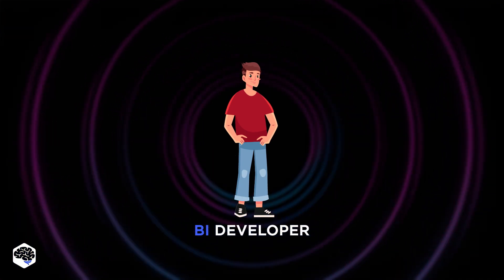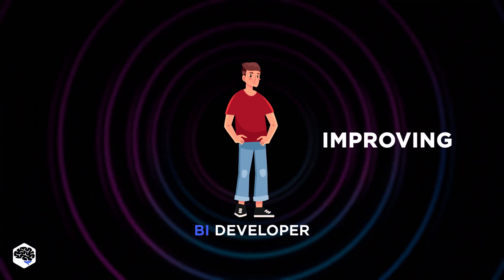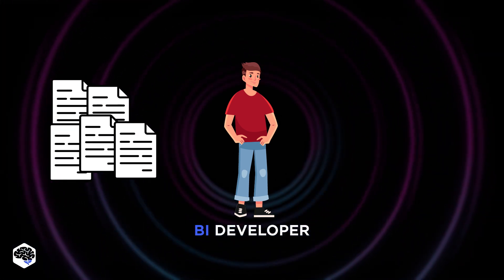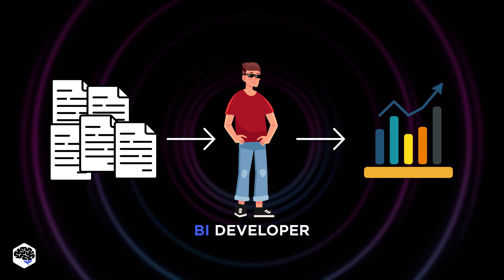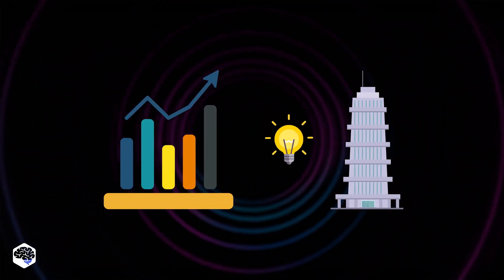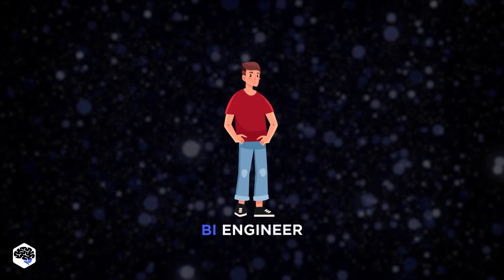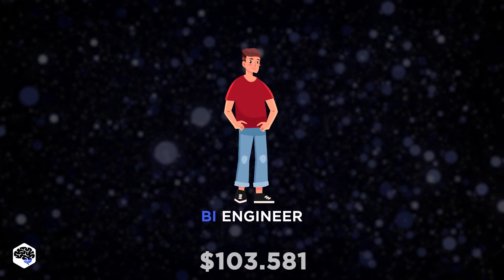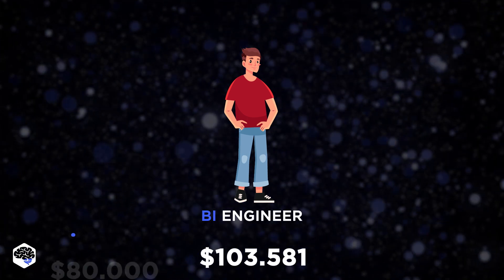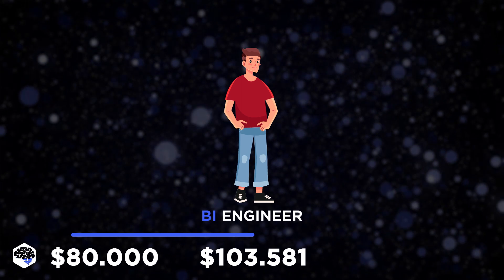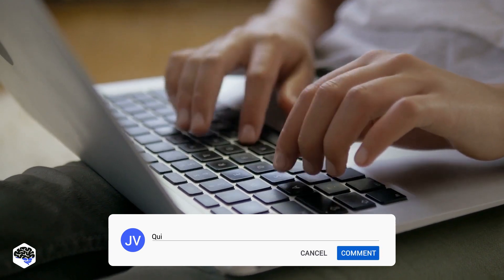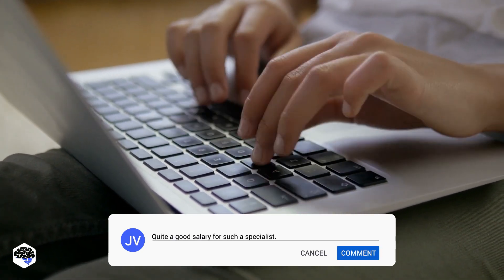A BI developer is a person responsible for building, improving, and maintaining business intelligence tools. His primary goal is to transform data into valuable insights that can be further studied and used in making important business decisions. The average base pay of a BI data engineer in the U.S. is $103,581 per year, with $80,000 at the low end and $135,000 at the high end. Do you think the average salary for such professionals is fair enough? Share your thoughts in the comments.